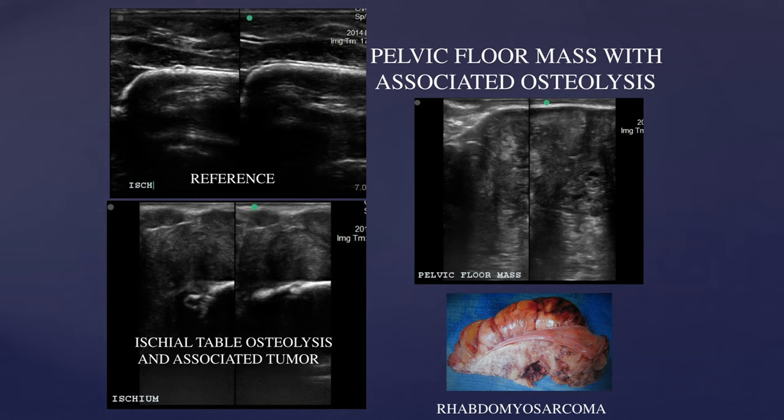Slide three shows a pelvic floor mass with associated osteolysis. You can see the normal reference images of the cranial aspect of the ischial table in the upper left-hand ultrasound, and then you can see the osteolysis of the normal bone surface along with an associated mass on the pelvic floor right at the cranial brim. The mass is demonstrated in a photograph at the bottom right-hand side of this slide, with an ultrasound of that mass above.